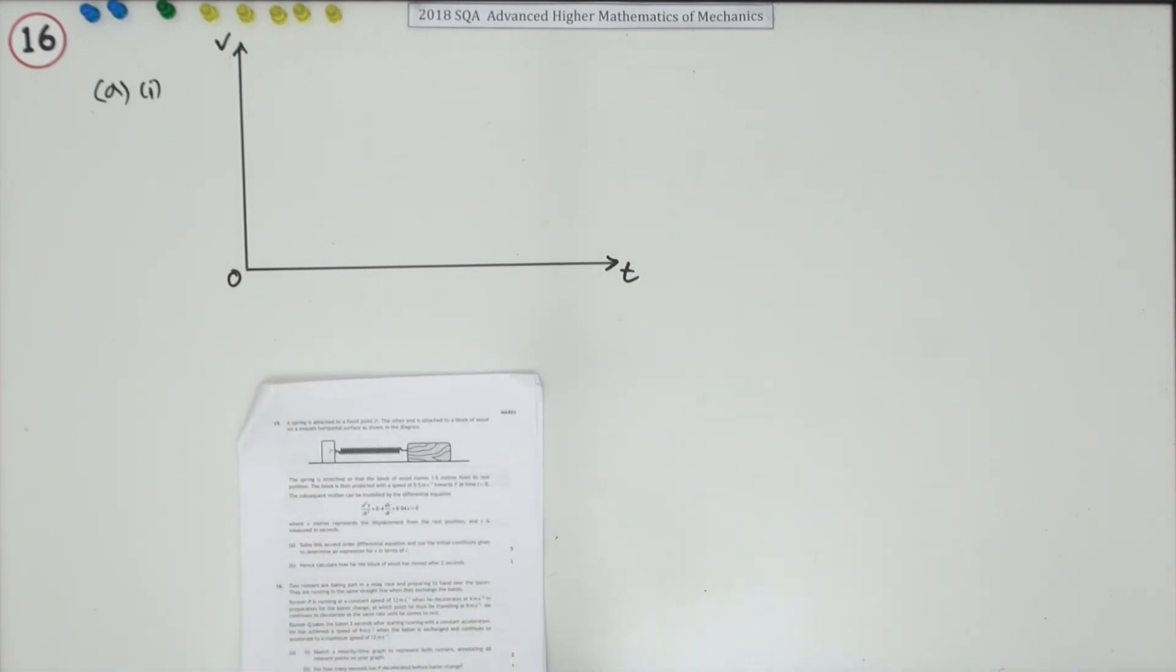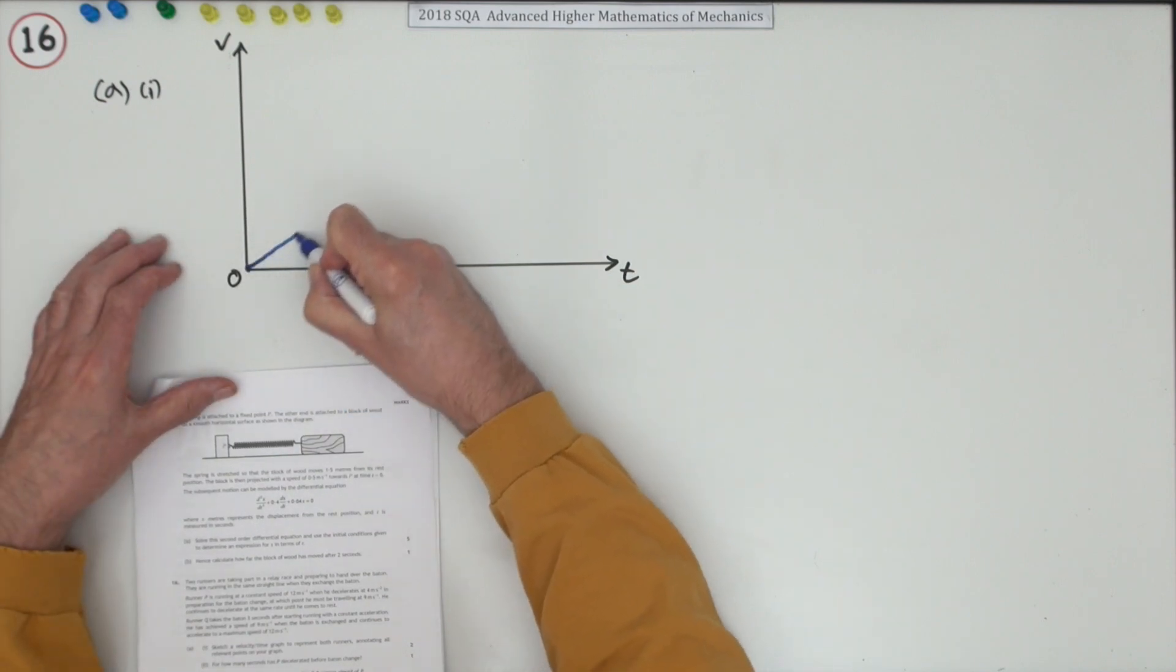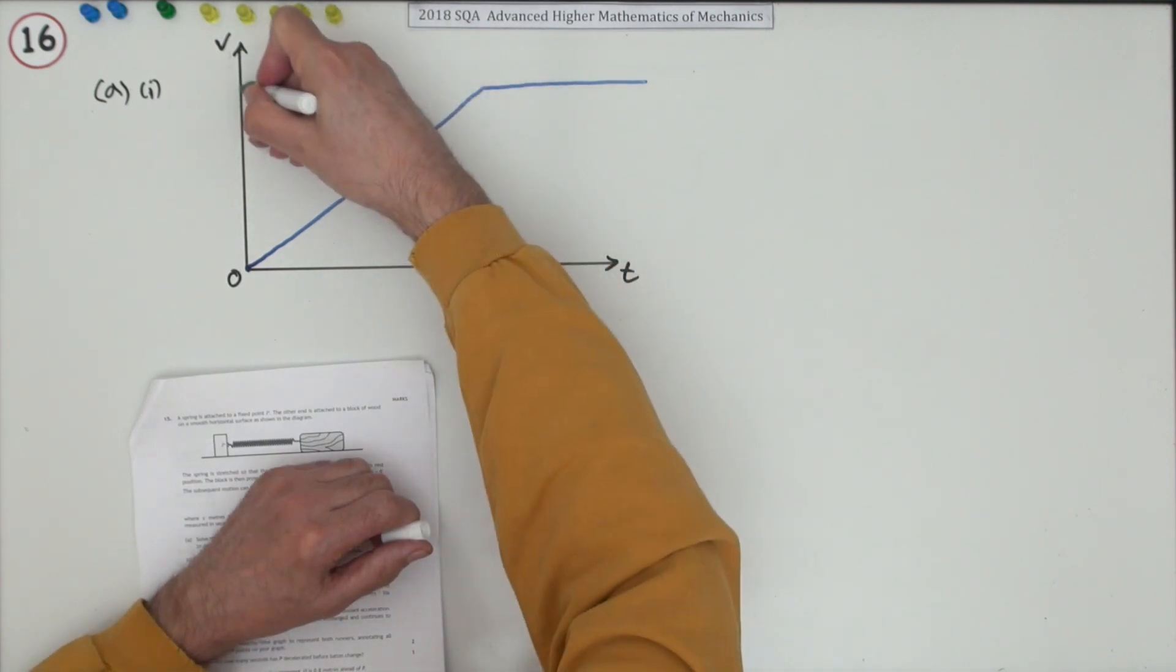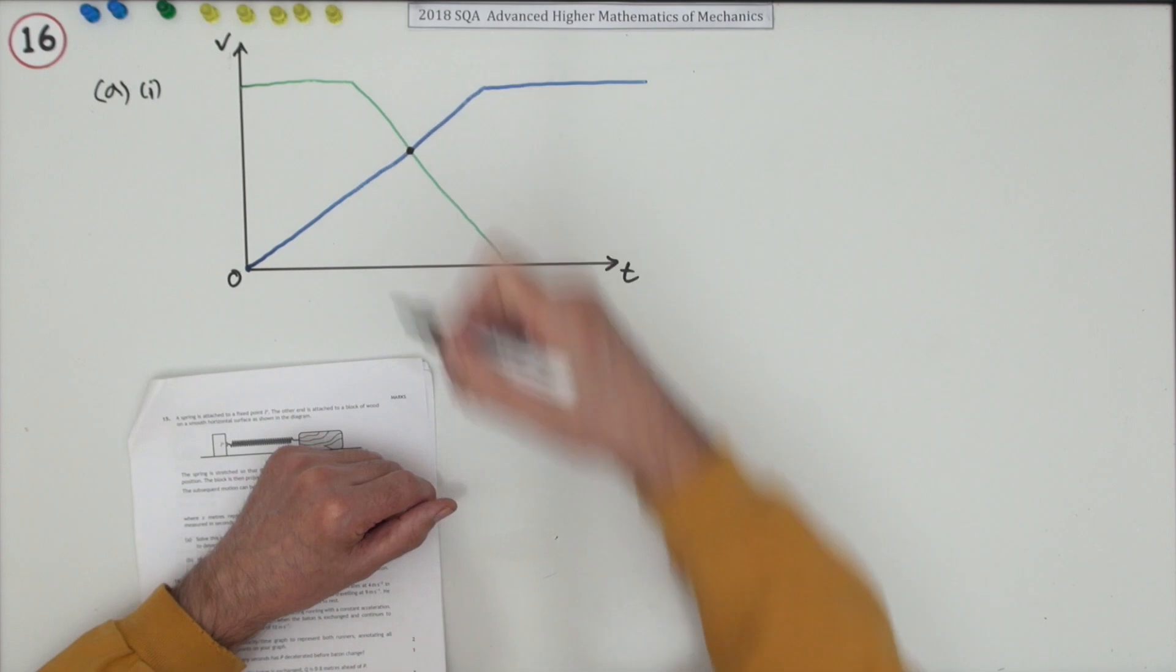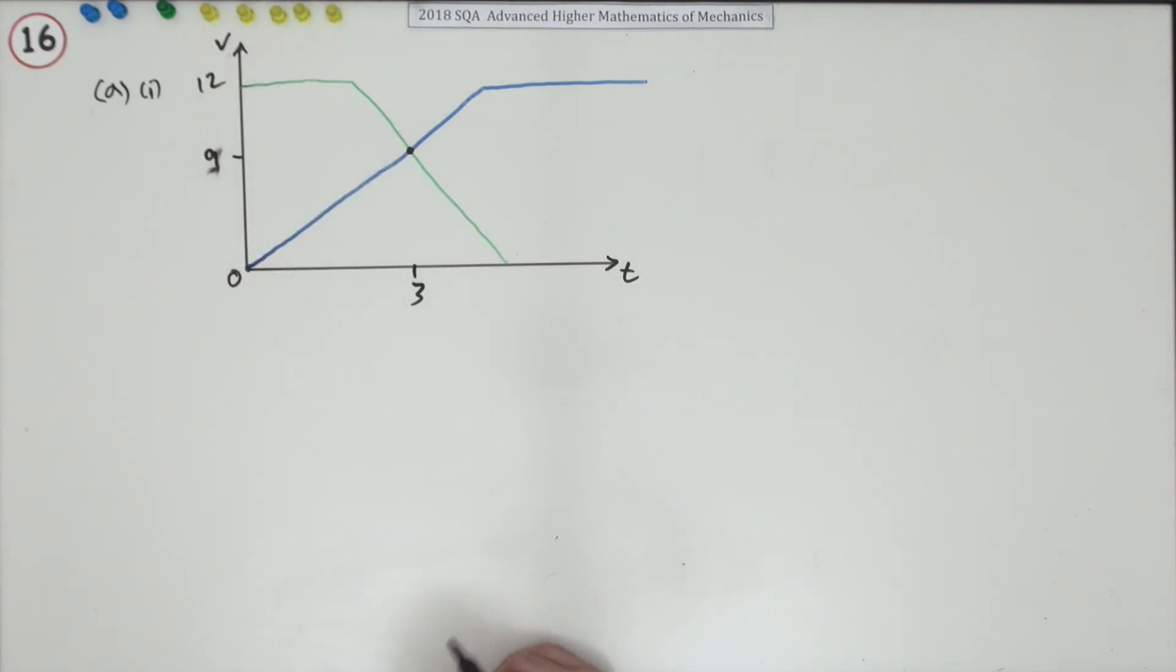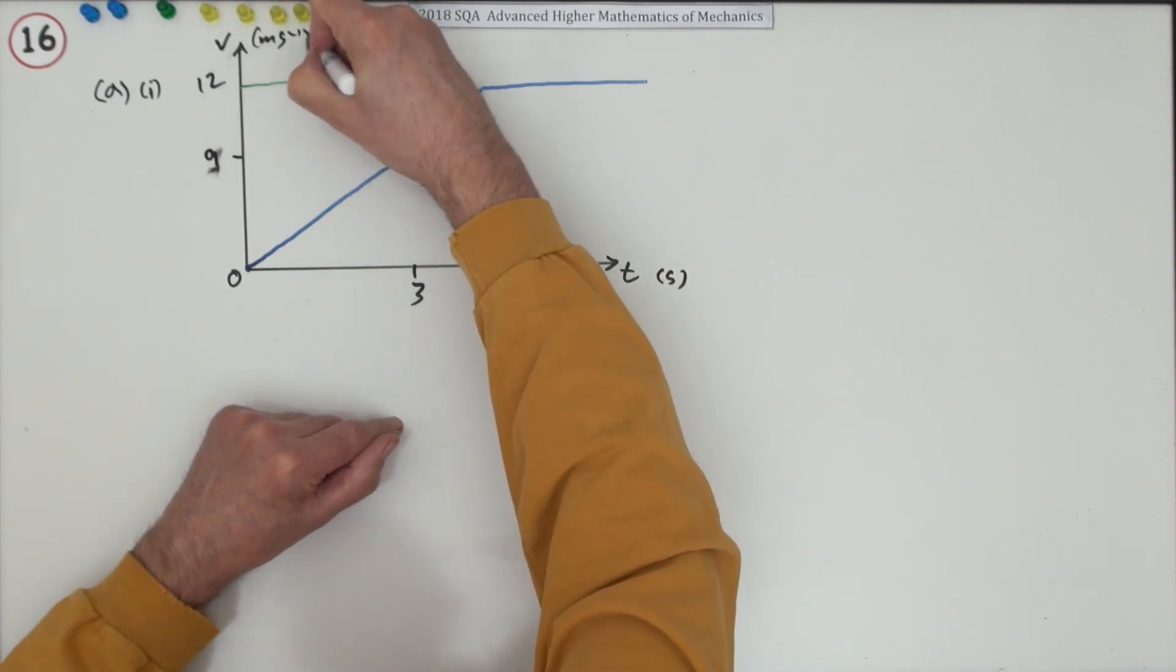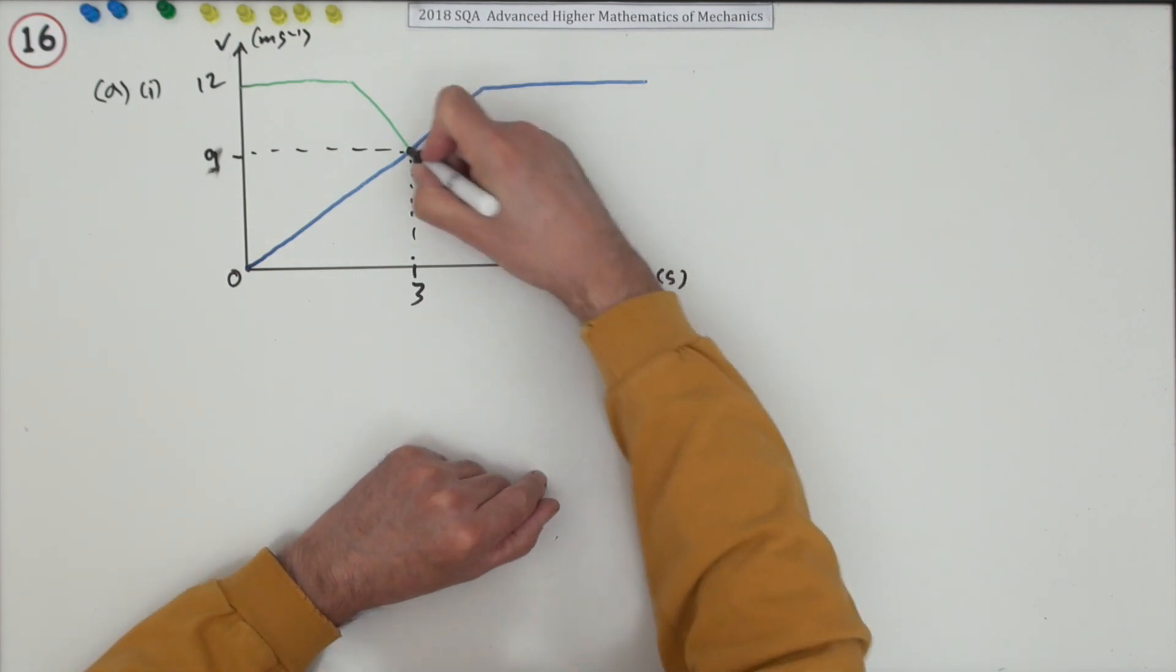Well the picture seems fairly straightforward then. Q could start anywhere, may as well just start Q here because the calculations before it won't matter. So Q accelerates up to 9 with the baton change. So that's where the baton change takes place. The baton change takes place at 9 metres per second, coming in and going out at 12 metres per second, three seconds after Q starts running.